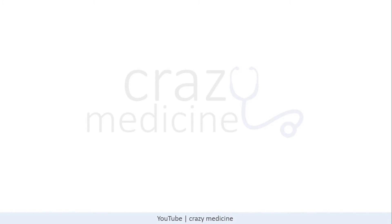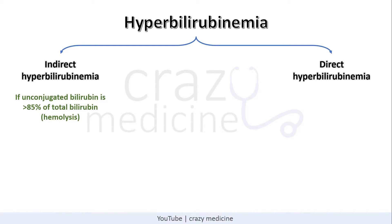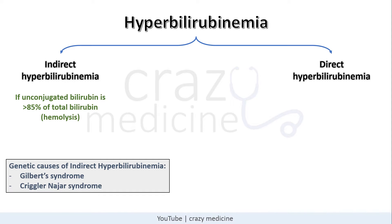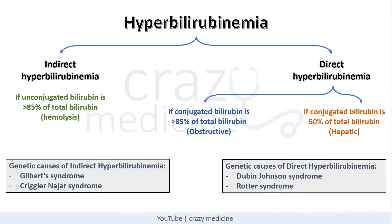Now, the approach to hyperbilirubinemia: it can be indirect or direct. If unconjugated bilirubin is more than 85% of total bilirubin, the cause is likely hemolysis. Genetic causes of indirect hyperbilirubinemia include Gilbert syndrome and Crigler-Najjar syndrome. In direct hyperbilirubinemia, if conjugated bilirubin is more than 85% of total bilirubin, the cause is mostly obstructive. If conjugated bilirubin is about 50% of total bilirubin, the cause is usually hepatic. Genetic causes of direct hyperbilirubinemia include Dubin-Johnson syndrome and Rotor syndrome.